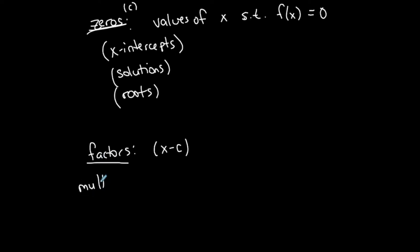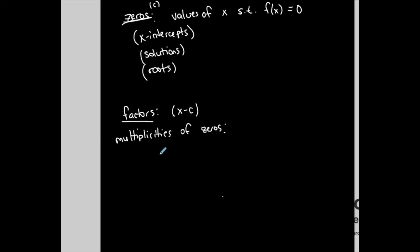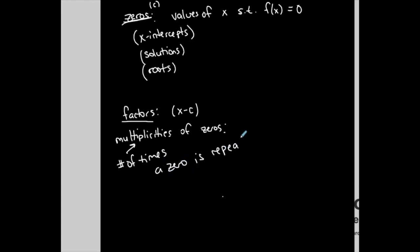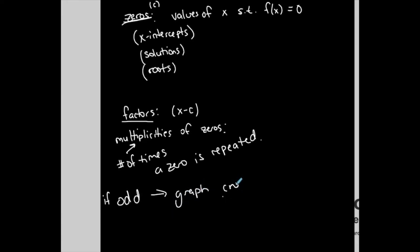We also talk about the multiplicities of zeros. Since a zero is also an x-intercept, the multiplicity tells us what happens at that point on the graph. The multiplicity is the number of times a zero is repeated. If the multiplicity is odd, the graph crosses at that x-intercept. If the multiplicity is even, the graph touches — but does not cross — at that x-intercept.